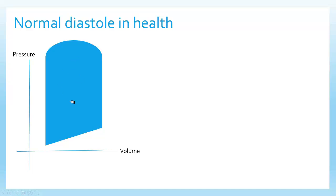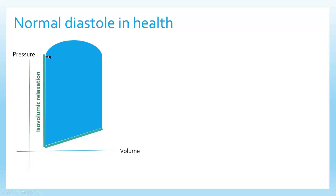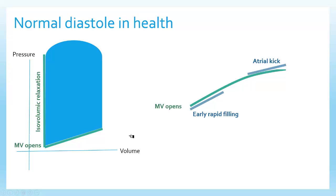This is your pressure-volume loop — a normal pressure-volume curve for the left ventricle. Diastole is the portion on the left. This is your isovolumic relaxation, where the pressure in the left ventricle is rapidly falling before any blood enters the chamber. Then the mitral valve will open. Diastole is actually comprised of several phases, but we're going to start by talking about early rapid filling and atrial kick, because these are the two major movements in blood flow we'll measure with the echo probe.